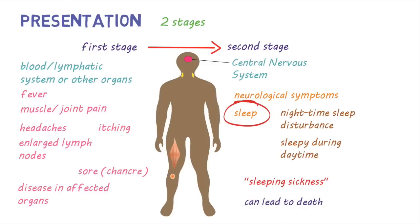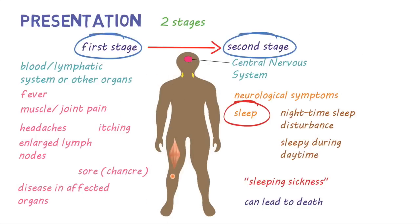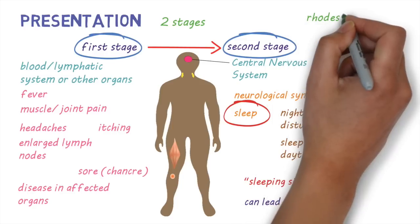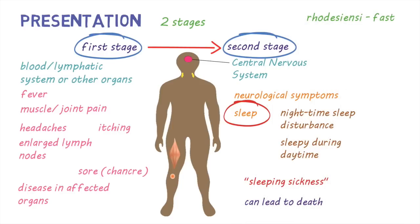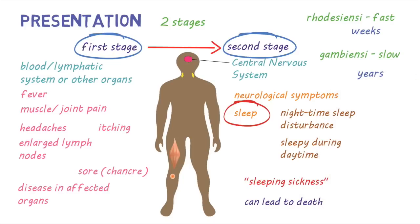The severity of the disease and how quickly it progresses from the first stage to the second stage depends on the type of parasite. In Rhodesiensi infections, it's quite fast, usually a few weeks. On the other hand, in Gambiensi infections, it may take several years. People who get infected may not have symptoms for months, if not years, and when they do, they're usually in the second stage.